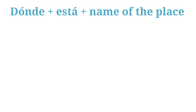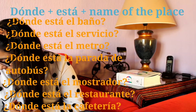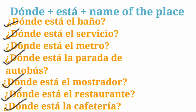Let's practice. Repeat after me: 'dónde está el baño,' 'dónde está el servicio,' 'dónde está el metro,' 'dónde está la parada de autobús,' 'dónde está el mostrador,' 'dónde está el restaurante,' 'dónde está la cafetería.'